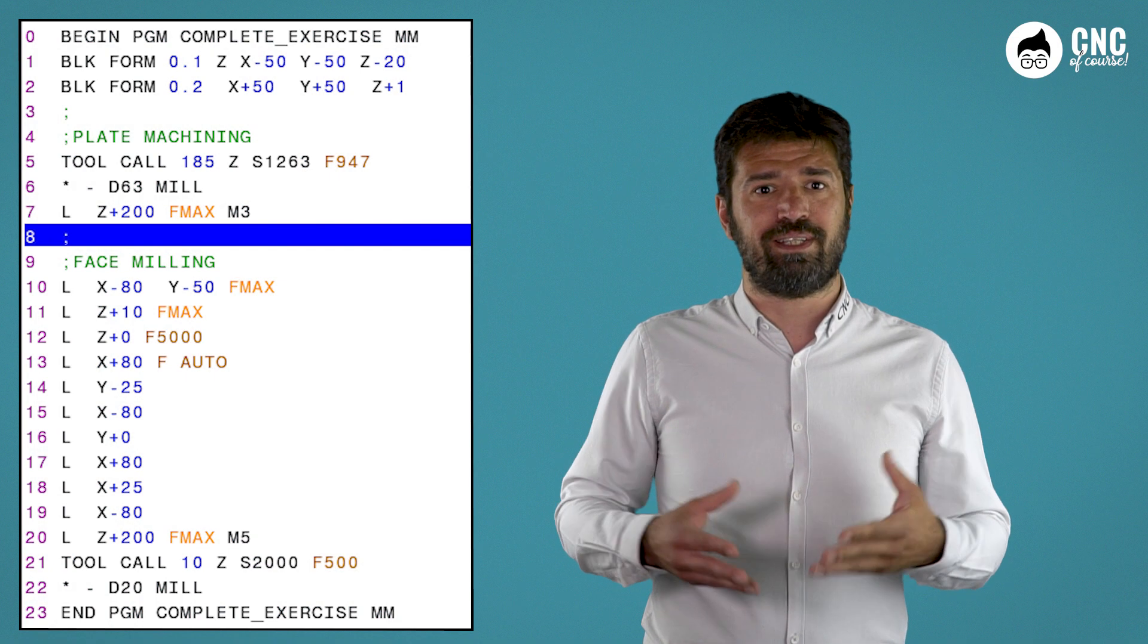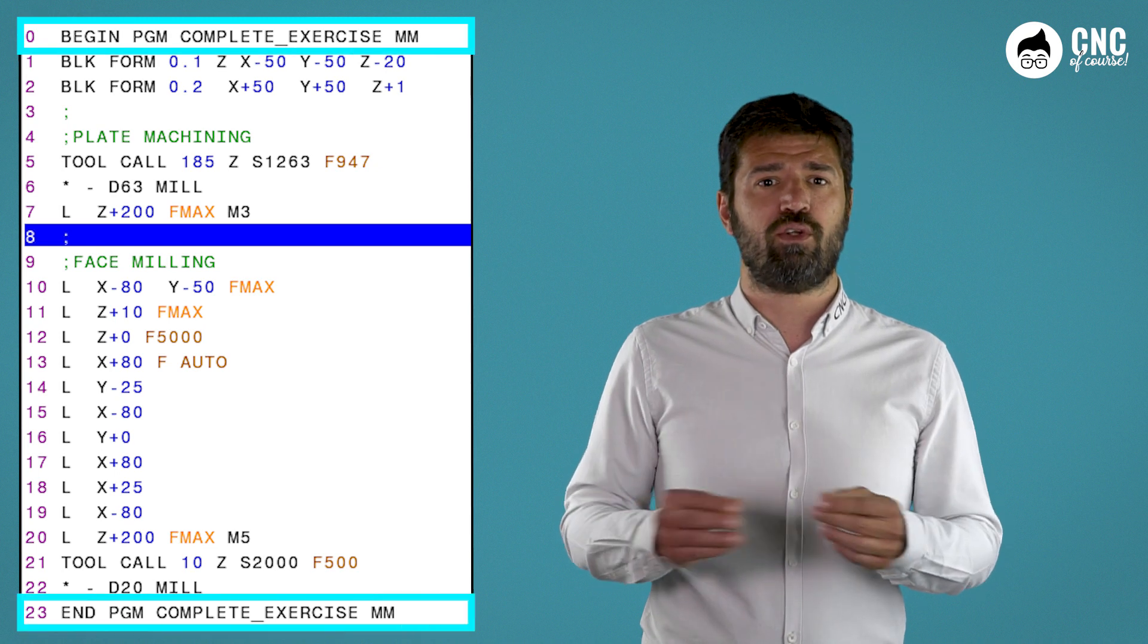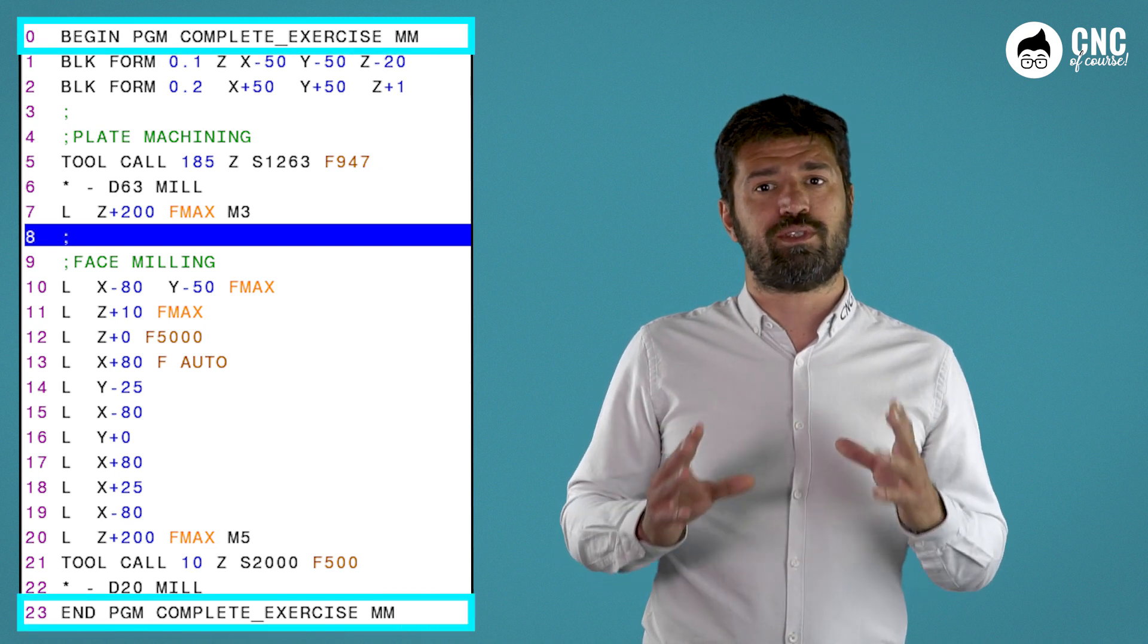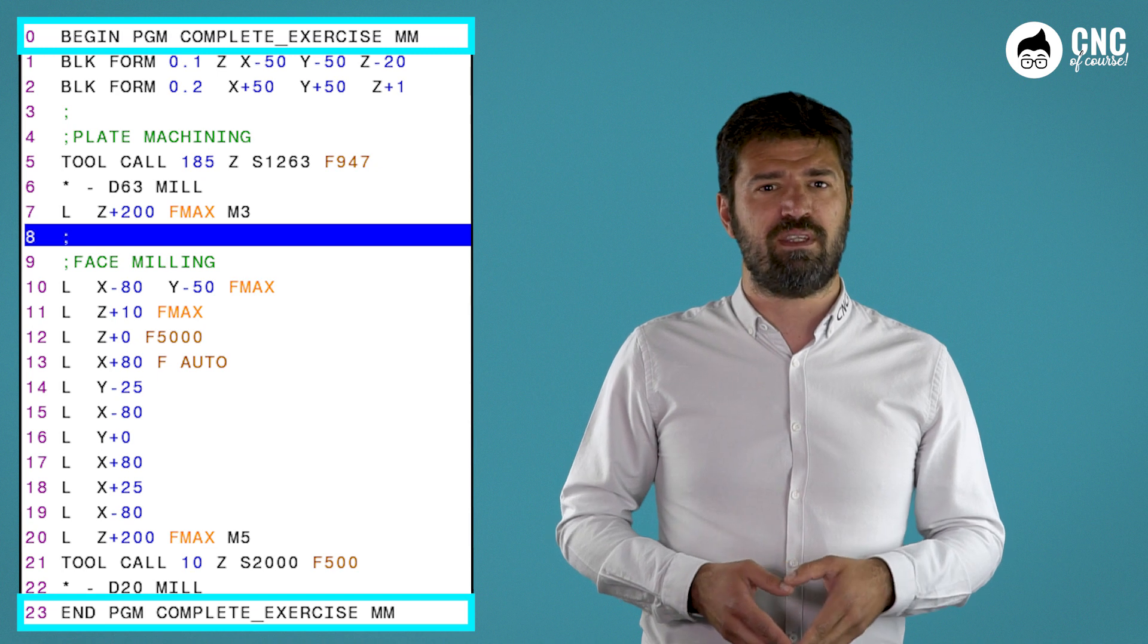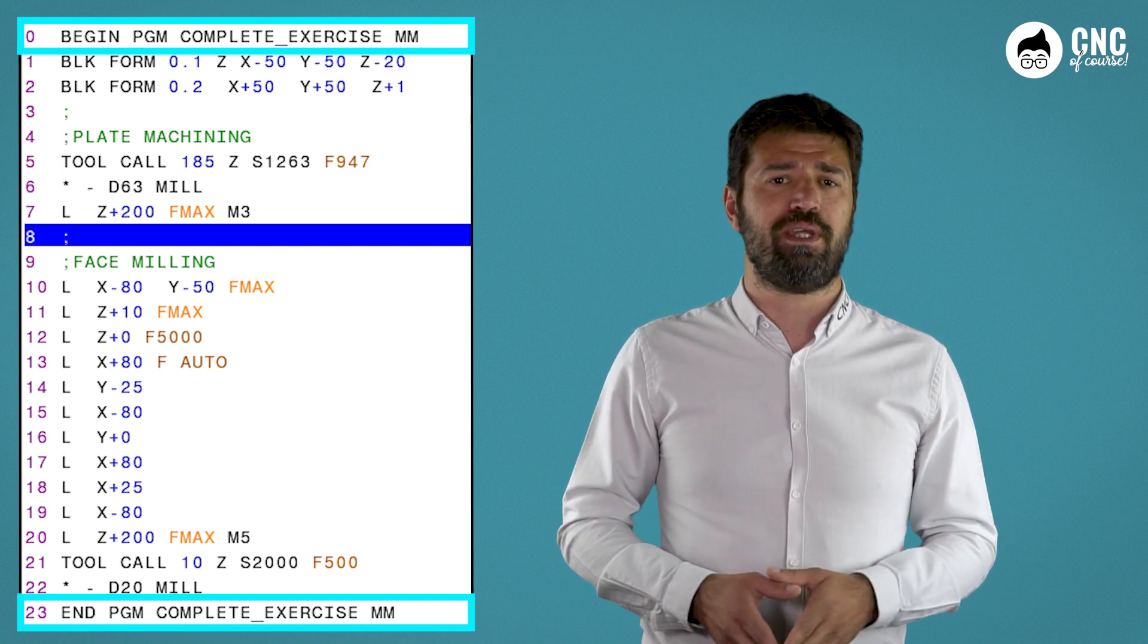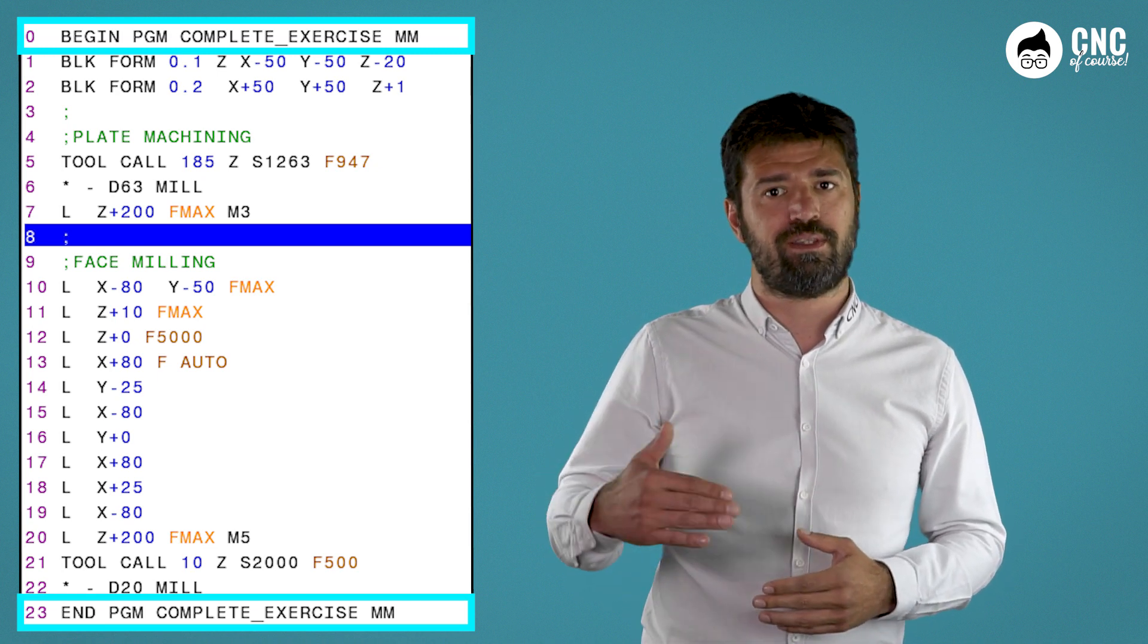As you can see, the first and last lines of our program have been created. All the instructions and comments will go inside these two blocks, and the lines will be numbered automatically in a progressive, ascending way with a step of one. In the same way, if a program is written or modified from a PC, you can ignore the numbering because it will be renumbered automatically when you load it into your NC.